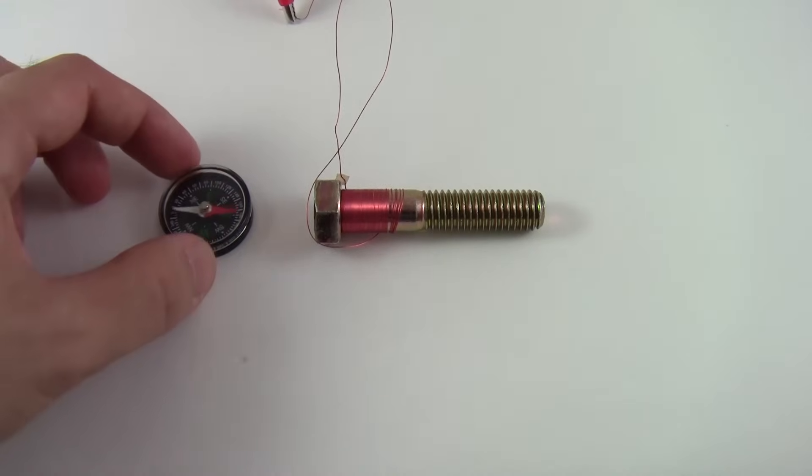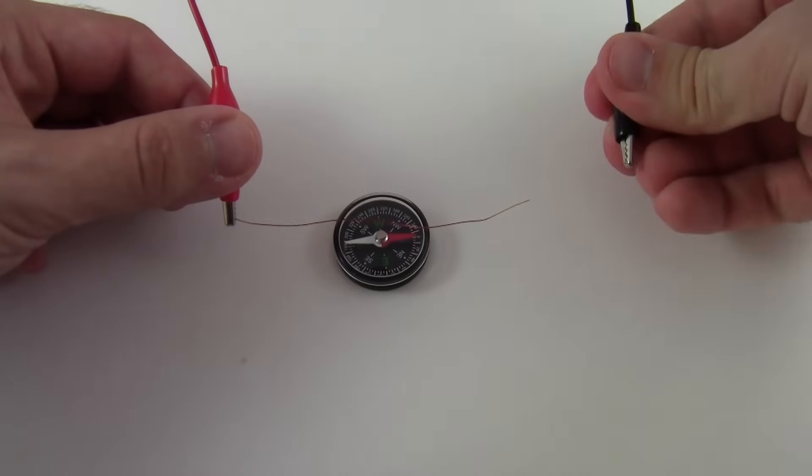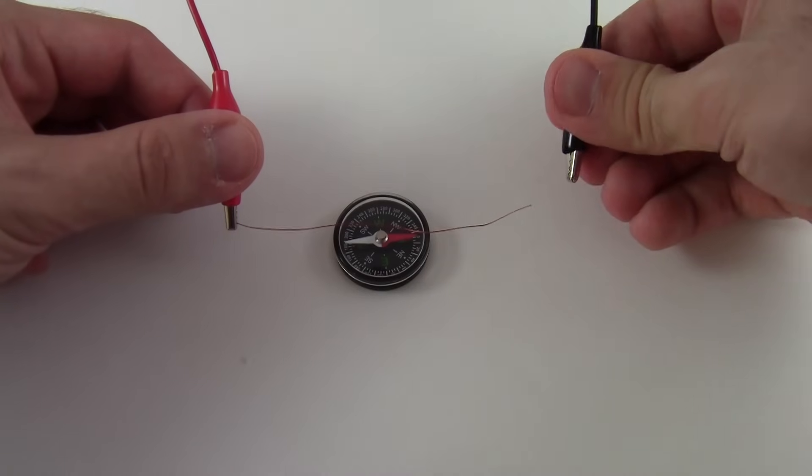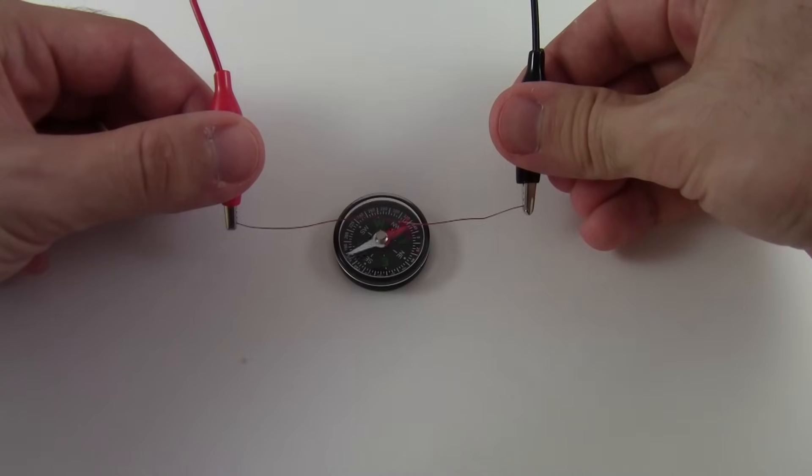So how does a coil of wire manage to behave the same way? It turns out that moving electrical charge, or current, creates a magnetic field. Watch what happens when I connect this piece of wire to a battery. It makes the compass needle move just like a magnet did, so we know the wire must be creating a magnetic field.